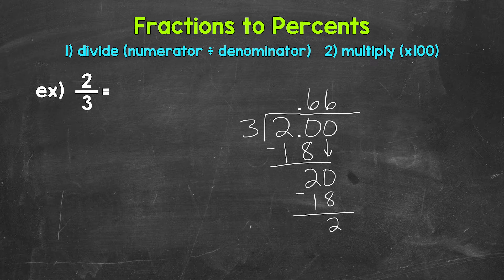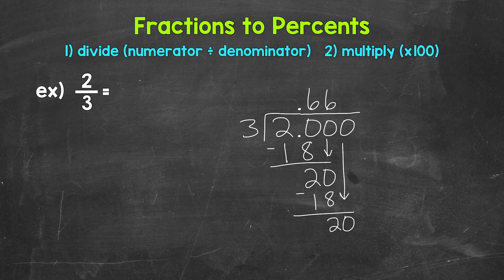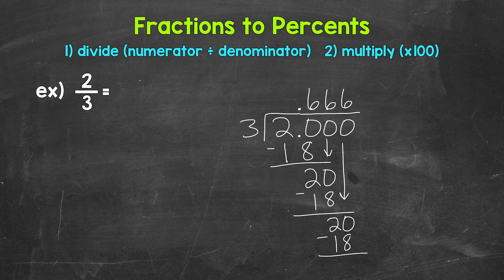So we get another two and we can use another zero that we can bring down to continue on. We have 20 again, 20 divided by three, which is six, multiply six times three is 18, subtract 20 minus 18 is two.